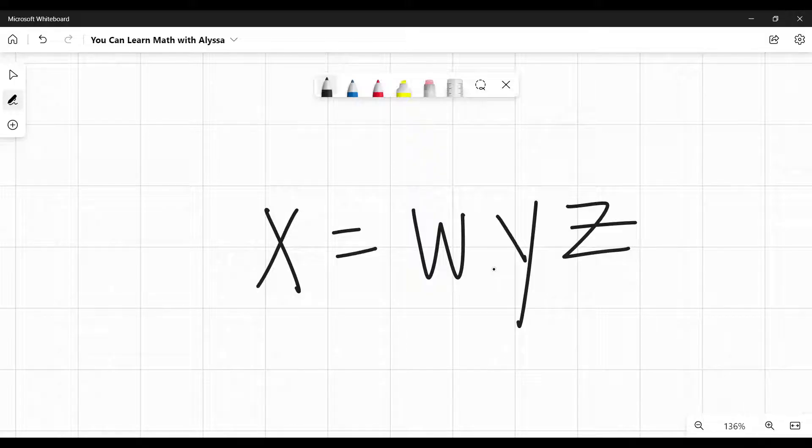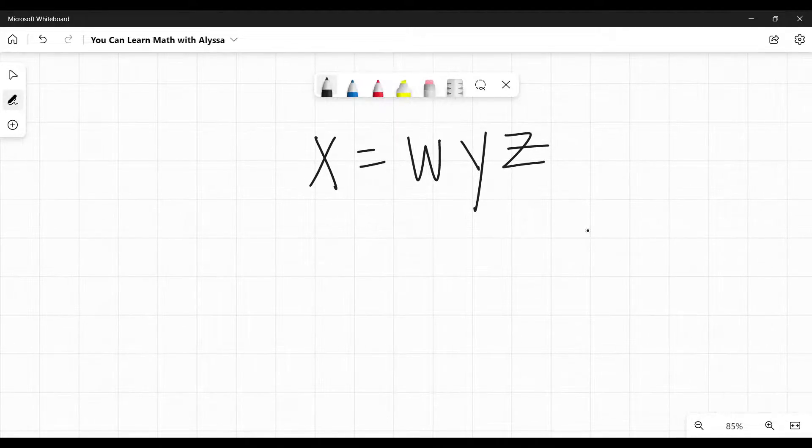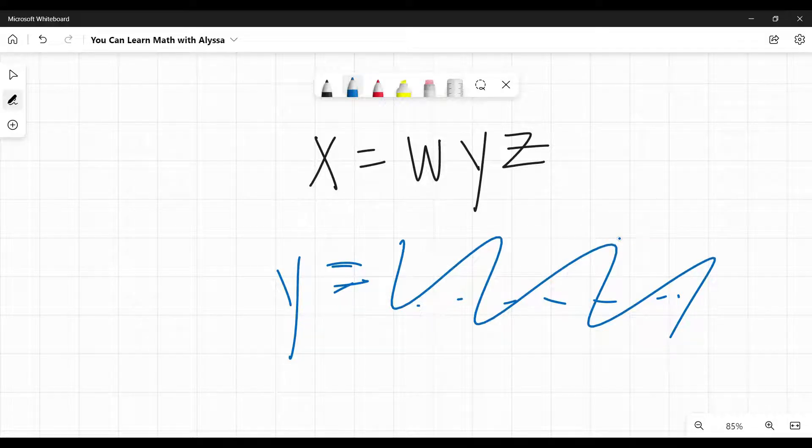We are not figuring out the value of y as in a specific number. When you see this solve for a variable, what I want you to think is, I want that variable to be all by its little lonesome and everything else to be on the other side. So your answer is going to be y equals something. We don't know what yet, but when it says solve for y, your answer better have that variable, in this case y, by itself equals and everything else in the problem needs to be over here on the other side.